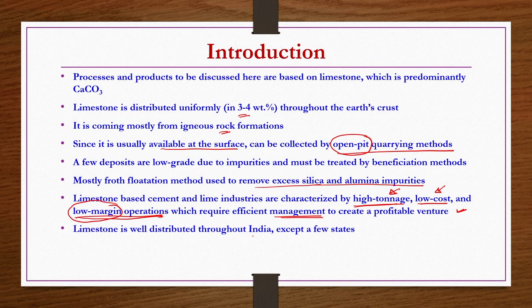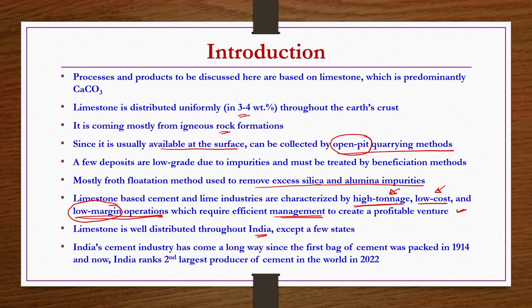Limestone is well distributed throughout India, so we do not need to depend on export. It is available in almost all states except West Bengal and Assam, where it is available in negligible quantities. Indian cement industry is indigenous — we do not depend on any foreign or imported raw materials. Indian cement industry has come a long way since its first bag of cement was packed in 1914 in Porbandar, and now India ranks as the second largest producer of cement in the world.